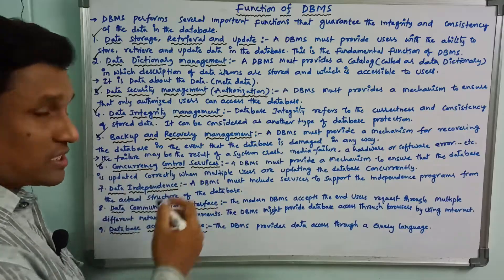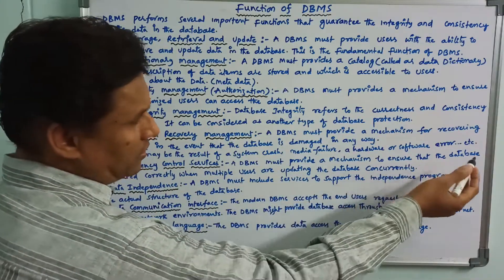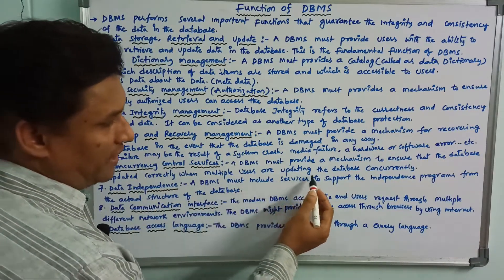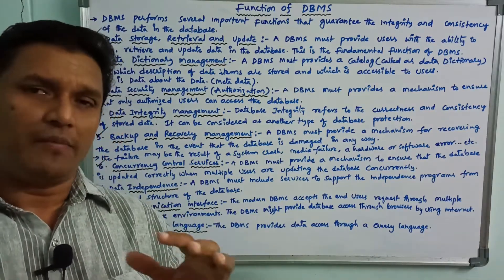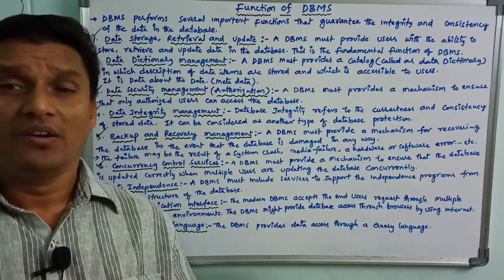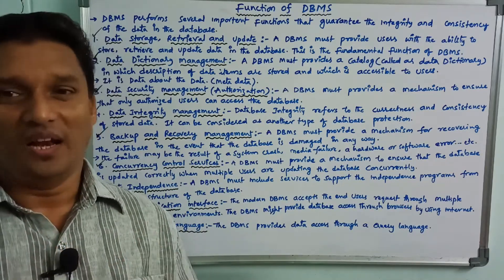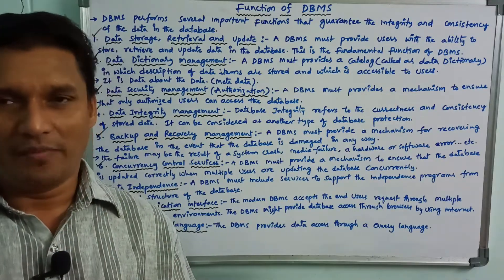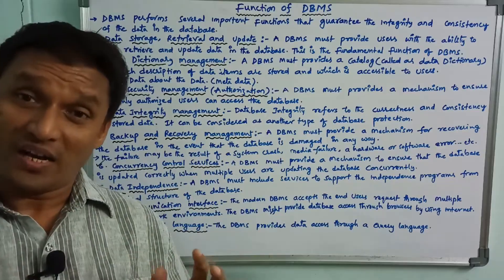Next is concurrency control schemes. A DBMS must provide a mechanism to ensure that the database is updated correctly when multiple users are updating the database concurrently. More than one user can use the database without problems, and the answer to managing this is concurrency control.